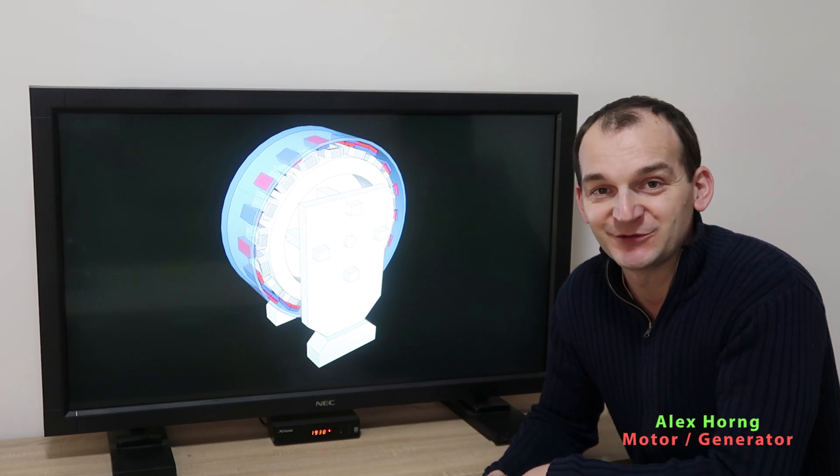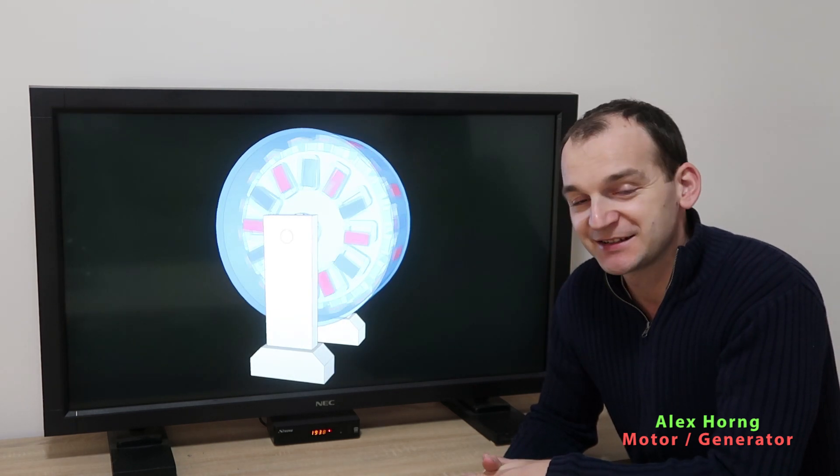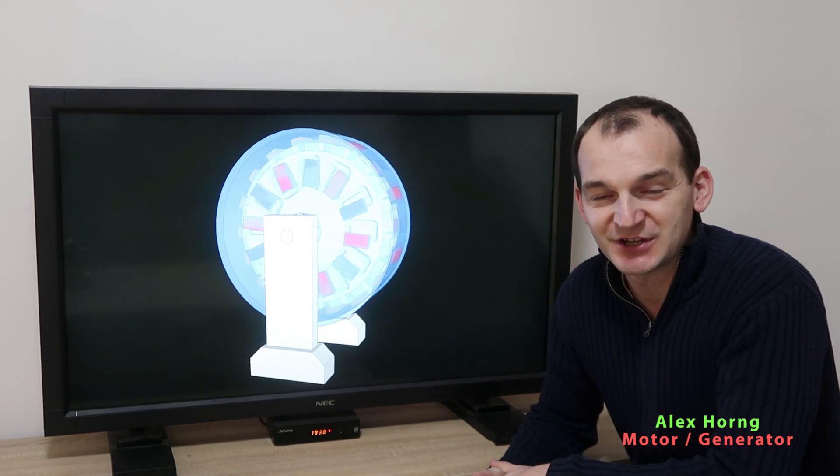Basically this is how every over unity motor generator works. This is the very simple design where you have a huge rotor on which you have the primary coils which is the motor and the secondary coil which is the pickup coil or generator.